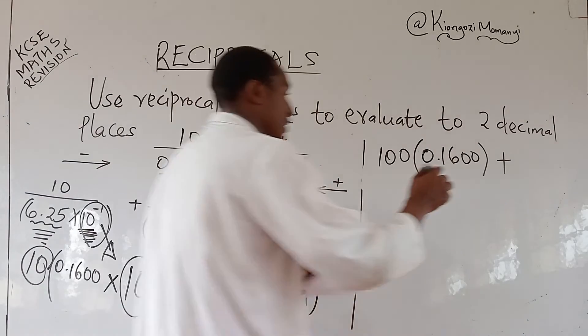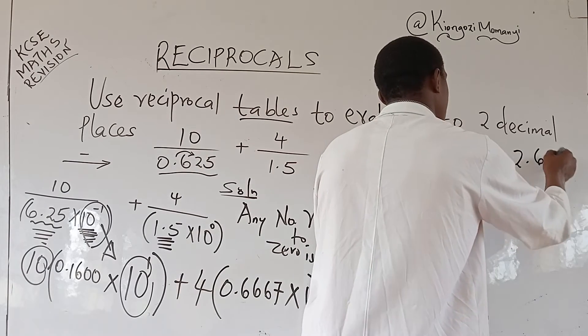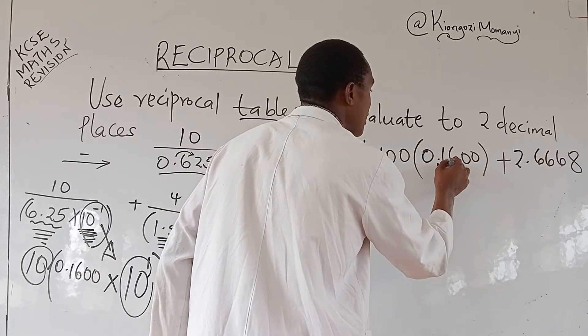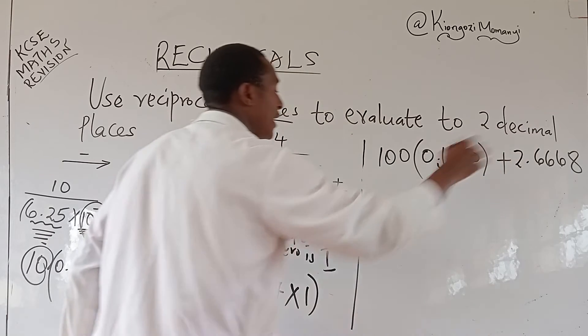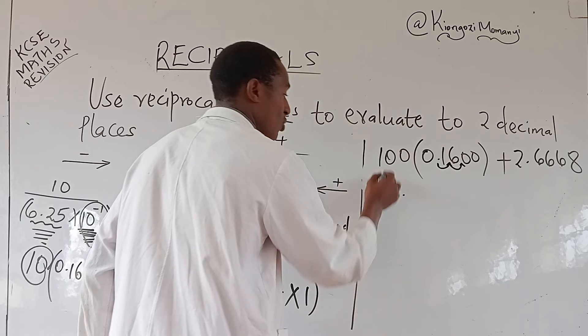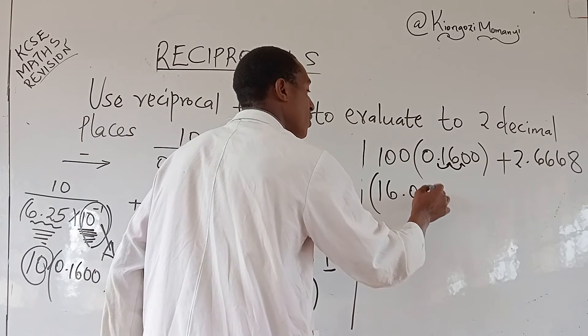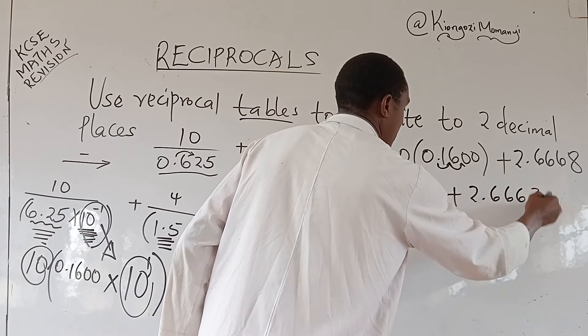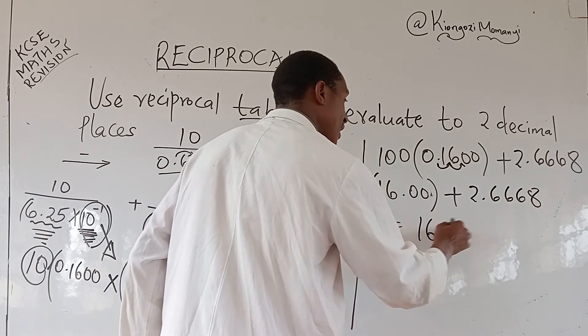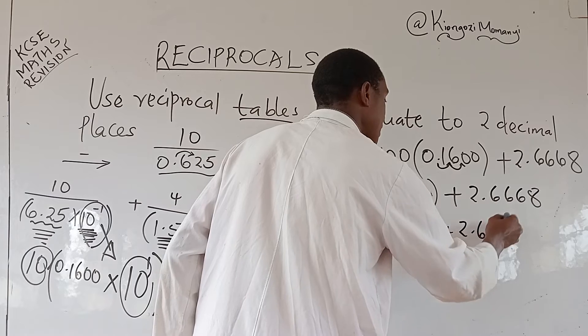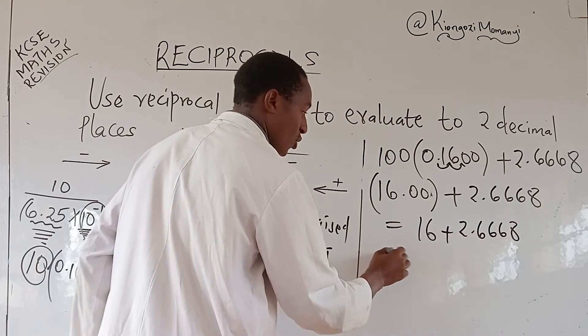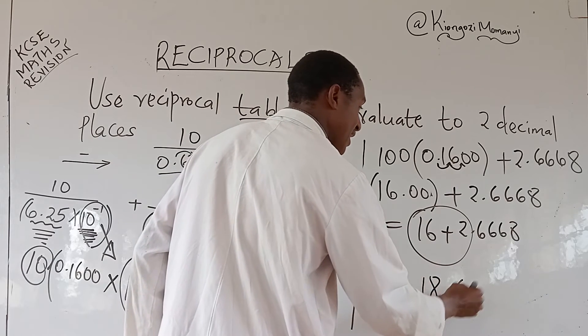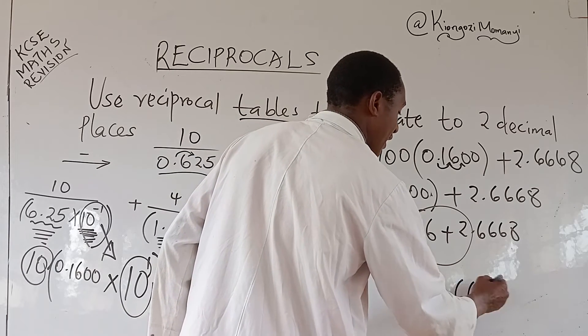Then plus 4 times 0.6667. You can use your calculator there. You will get, times 1, you will get 2.6668. This one is going to be the zeros. The two zeros are going to push the left one towards that direction. And you should have 16.00 plus 2.6668. This is the same as 16 plus 2.6668. This one goes to 16 plus 2 is 18.6668.